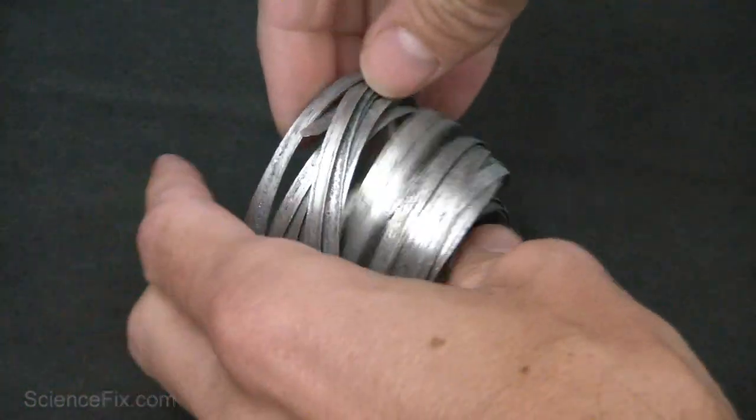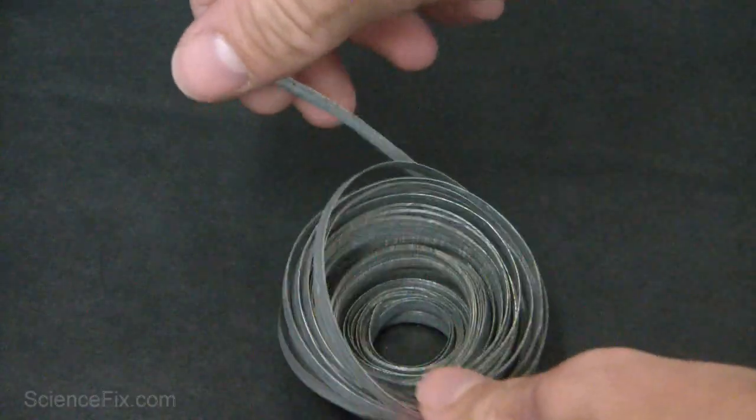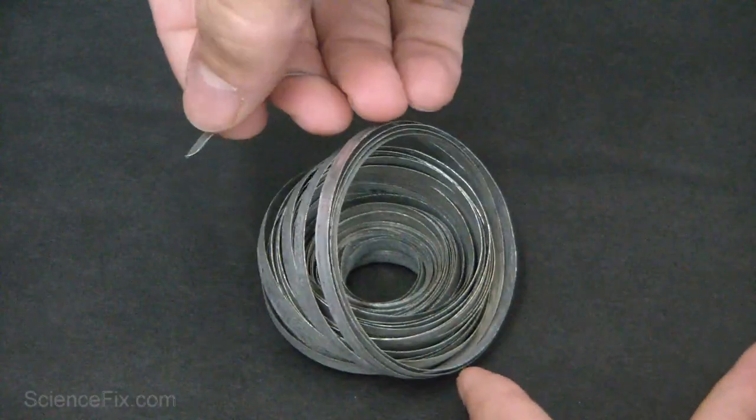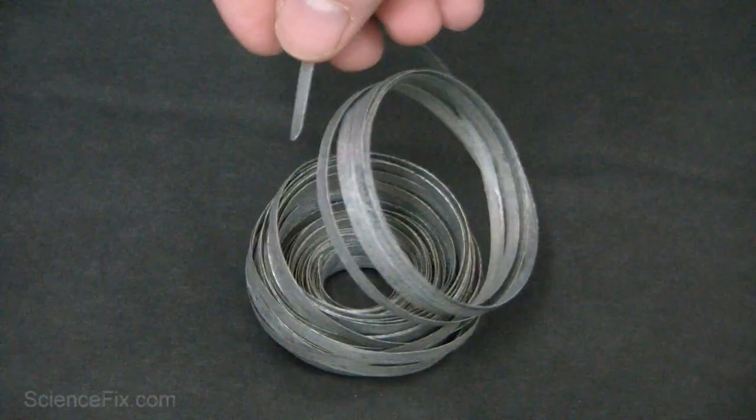Here we have a ribbon of magnesium. Magnesium is a metal. It has the properties of luster. You can see it's shiny. It's malleable. It's bendable. It can conduct heat and electricity.